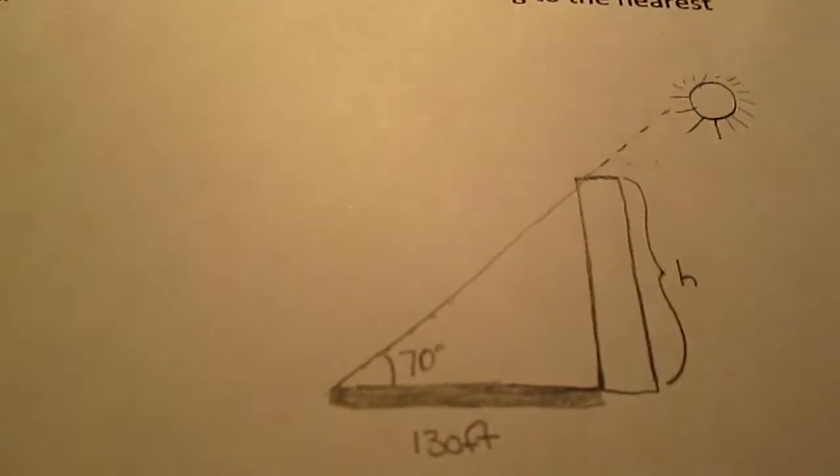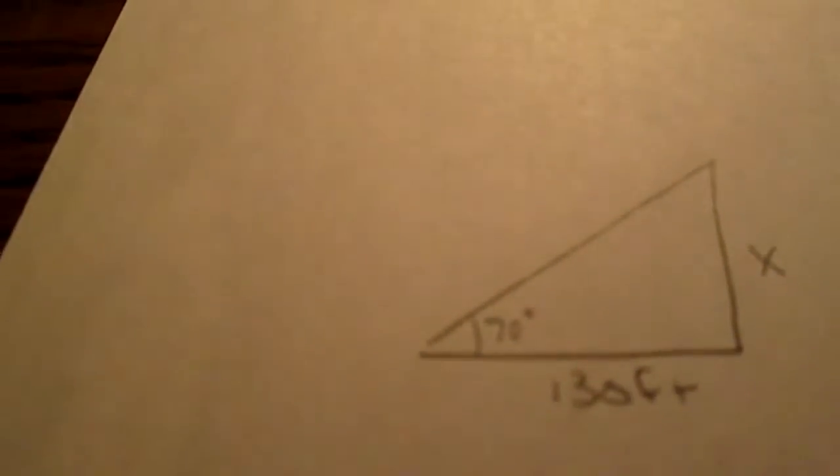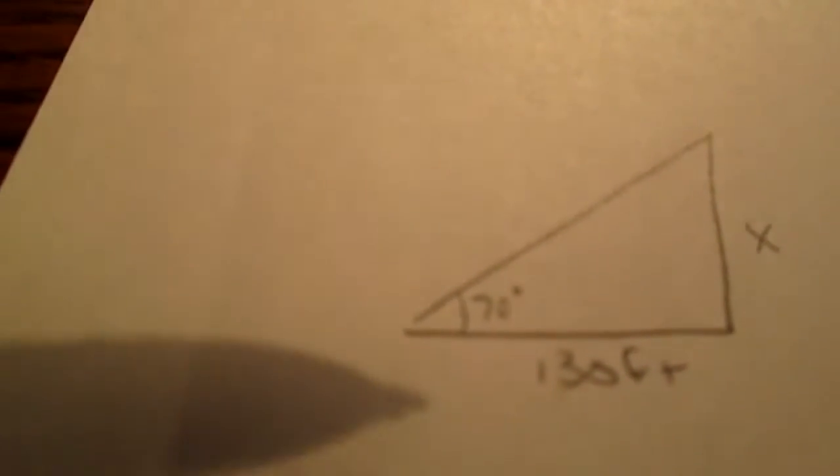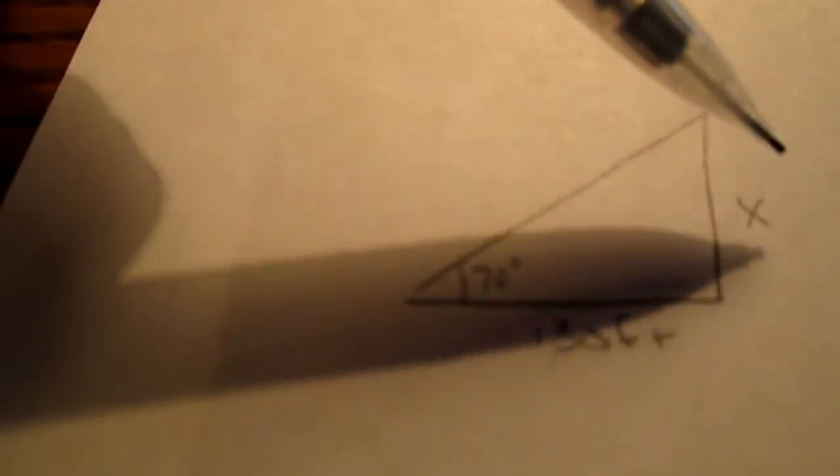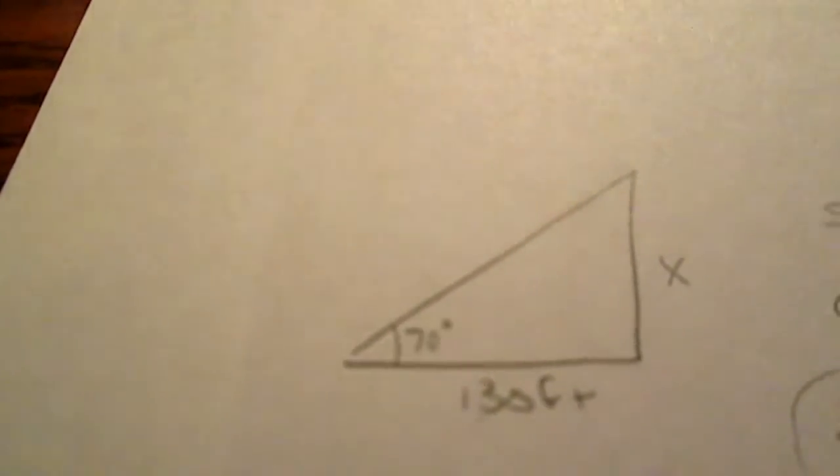What I would do is just redraw that where you're solving for x. And what you're looking for is what will give you opposite, which you have adjacent. So which sine, cosine, or tan will give you opposite over adjacent? I wrote out and circled tan, opposite over adjacent.